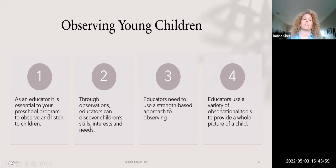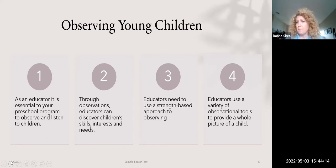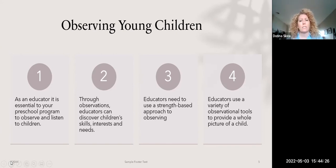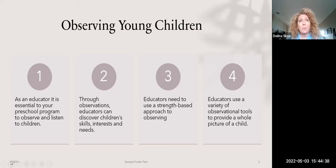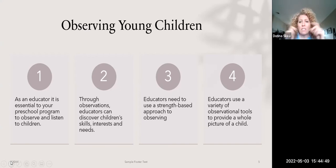We use a variety of observational tools to provide a whole picture of a child. We might use an anecdotal observation for a particular behavior, a running record or ABC sample to figure out what's triggering a certain behavior — identifying the antecedent, the behavior, and the consequences. Children's artwork is also a great opportunity: they love handing over drawings, and we can keep and use those as observations. We all have phones now, so we can also videotape and take photos.